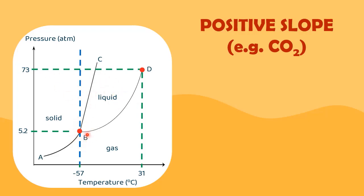The triple point of negative 57 degrees C and 5.2 atm tells us that liquid carbon dioxide cannot exist at pressures lower than 5.2 atm.